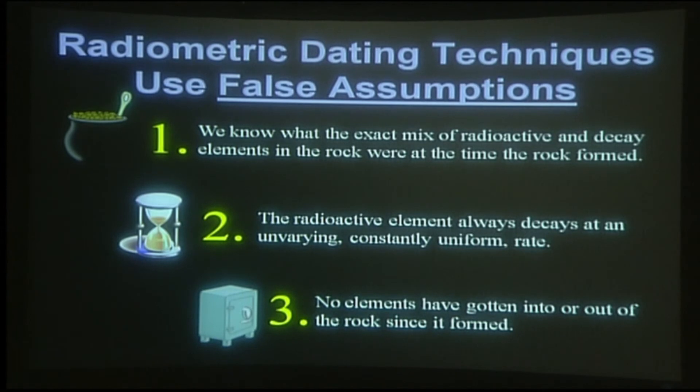And of course, the idea that elements have not gotten in or out — well, various radioactive elements actually do dissolve in water. They can be leached in or leached out of a deposit. The various byproducts, the various daughter elements — for instance, lead — can be moved by simply acid rain flowing through a formation. We know that uranium and lead can both be moved in and out of a deposit. You have no idea how much has been added or subtracted of any of these things while it was sitting in the ground. And so this throws all of these various methods completely askew and they're absolutely unreliable.